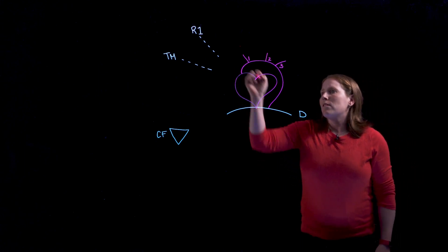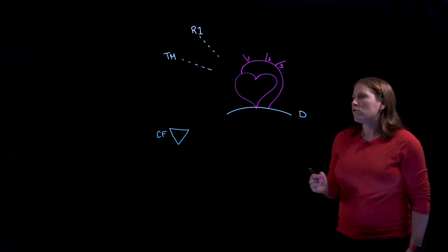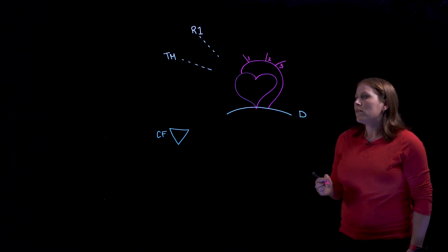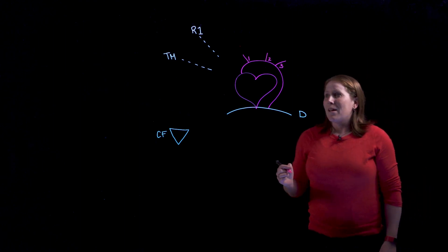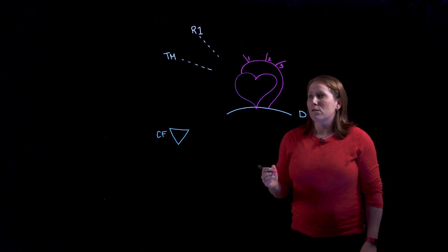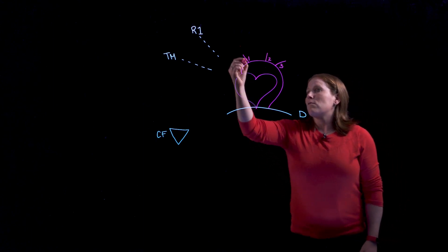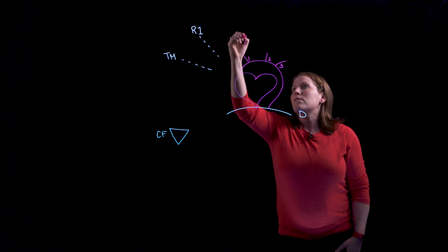Now if we look at the first branch, the brachiocephalic trunk, if we break that word down, brachio refers to arm, cephalic refers to head, and the word trunk tells us that this artery is going to branch again. And so let's do that. We'll show this split.